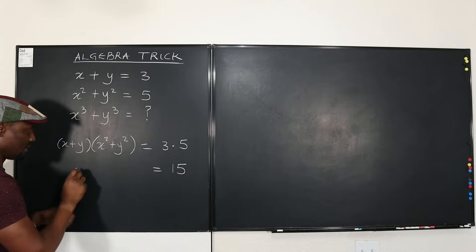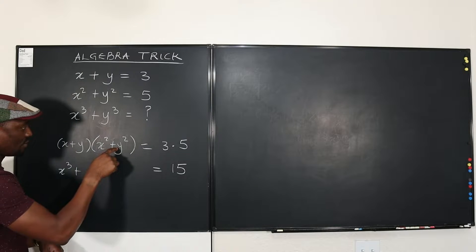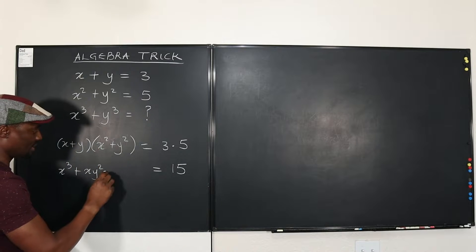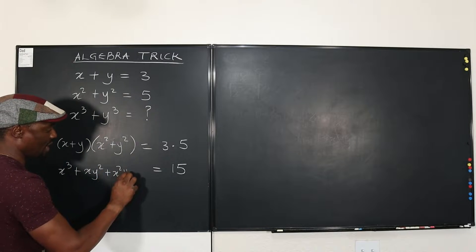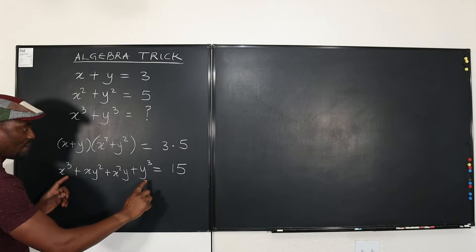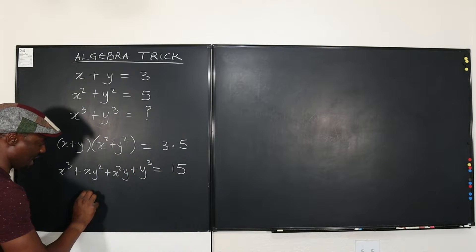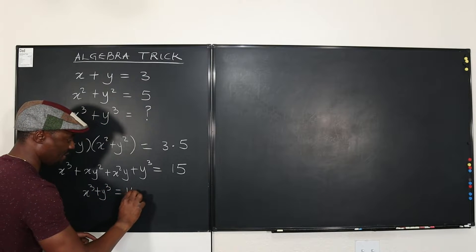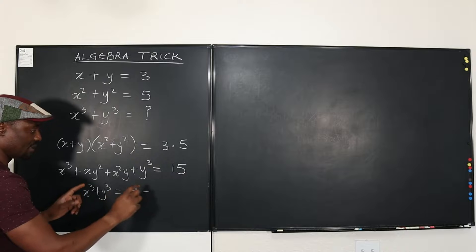So I know on the right hand side, I'm going to get 15. On the left hand side, when I distribute, I'm going to get X³ plus X times, there's going to be XY², then this times this is going to be plus X²Y plus Y³. Oh, so at this point, I know that my X³ + Y³ is equal to 15 minus these two. If I put both of these there,